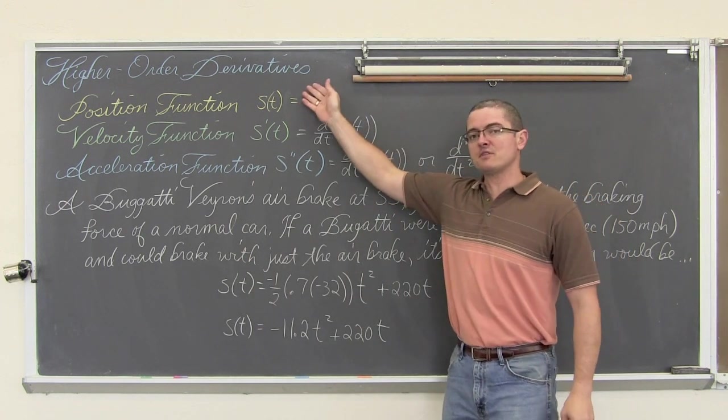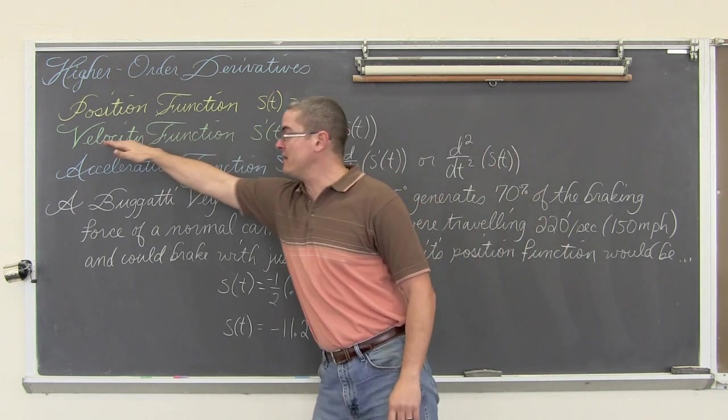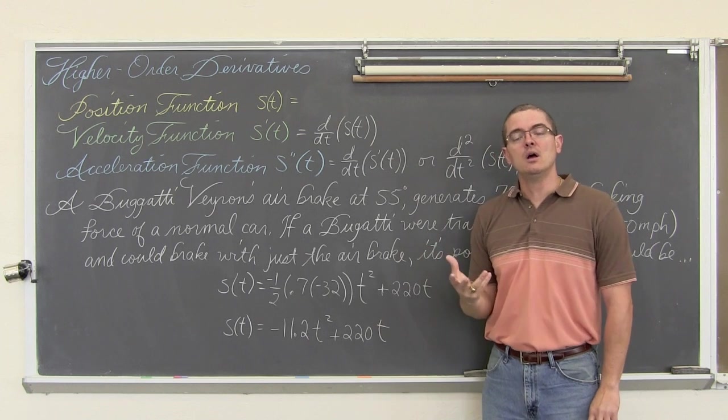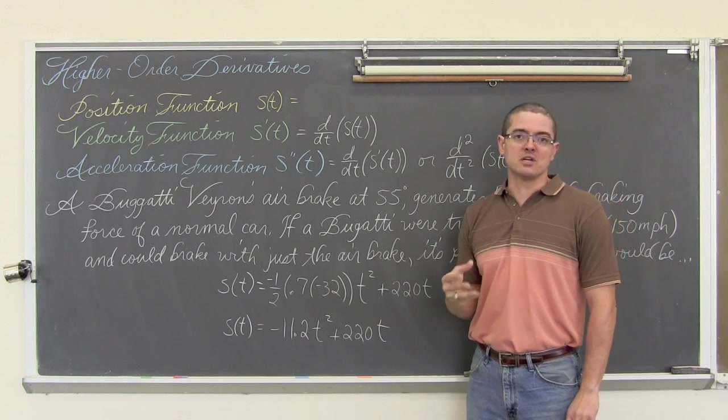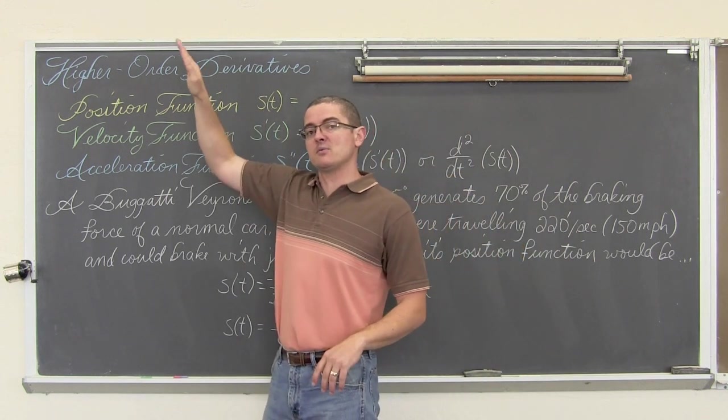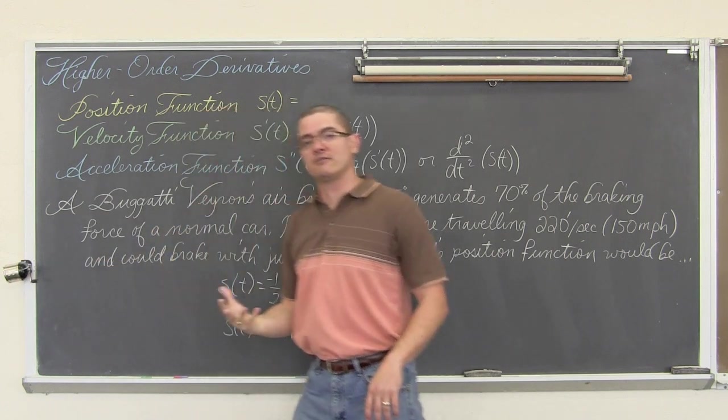When we are given a position function we can take that function and find the first derivative which will give us the velocity of that object. We have done a video on the vertical speed of an object where we took an object, threw it up, it had a positive velocity as it was rising, it reached its maximum height and at the start of a fall it had a negative velocity.